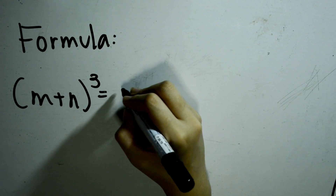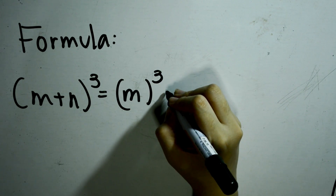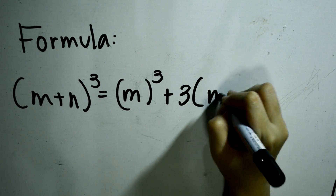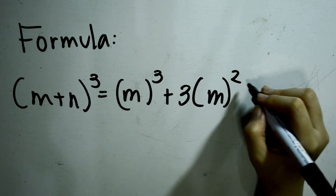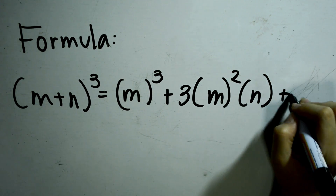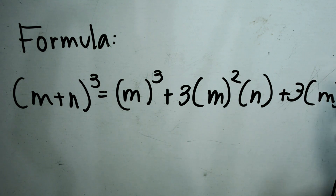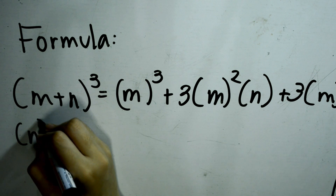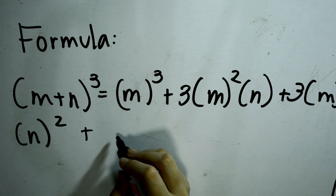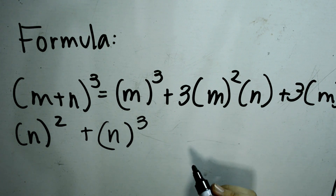First, we are going to cube the first term, plus 3 times the square of the first term times the second term. Then, plus 3 times the first term times the square of the second term. And lastly, plus the cube of the last term.